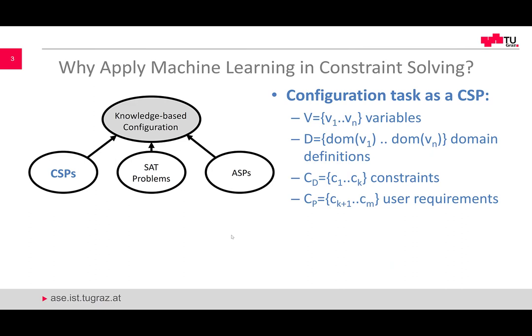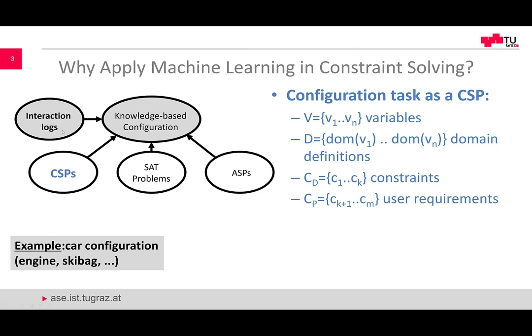What is the motivation for applying machine learning in the context of constraint solving? Let us have a look at the domain of knowledge-based configuration. Configuration problems can be represented in terms of CSPs, sub-problems, answer set programs, and different other types of knowledge representations. Sometimes we are in the lucky situation that we already have interaction logs, which basically represent interactions of users and existing configurations we are able to exploit for machine learning purposes.